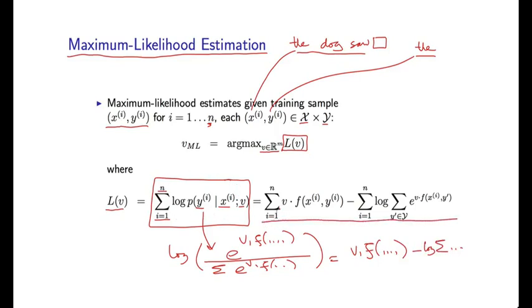So this is actually the feature vector on the i-th training example. And here I have these kind of log normalization terms. I have a sum i equals one to n log. Here I have a second sum over possible labels y primed. And e of v dot f of x i conjoined with y primed.